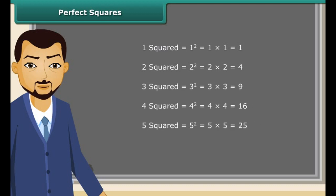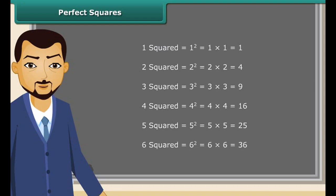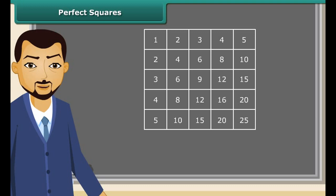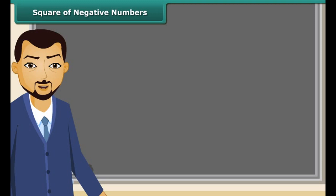Let us read, 1 square is 1, 2 square is 4, 3 square is 9, 4 square is 16, 5 square is 25 and so on. We can also find squares on the multiplication table. Do you know what do we call these numbers? They are called perfect squares.